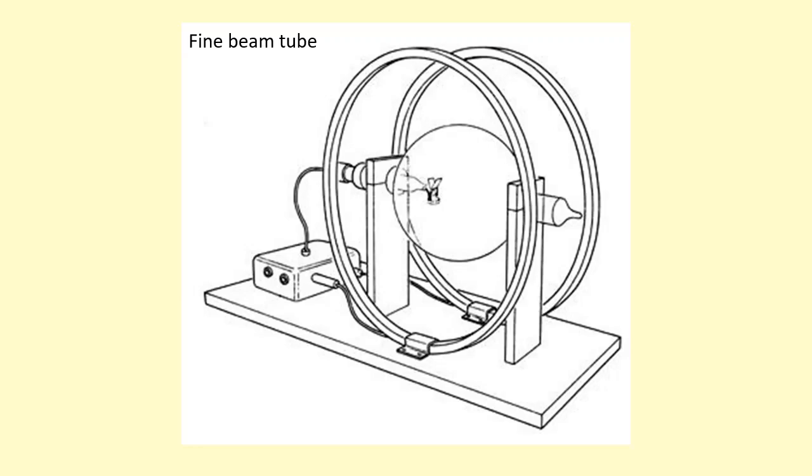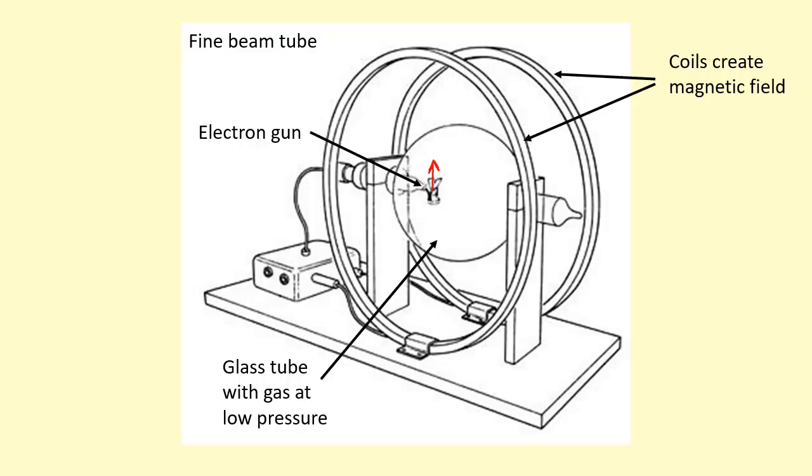This setup is called the fine beam tube. It's used to determine the specific charge of the electron. You have an electron gun over here and it's going to fire an electron in this direction, and these coils here will create a magnetic field going through that glass tube.